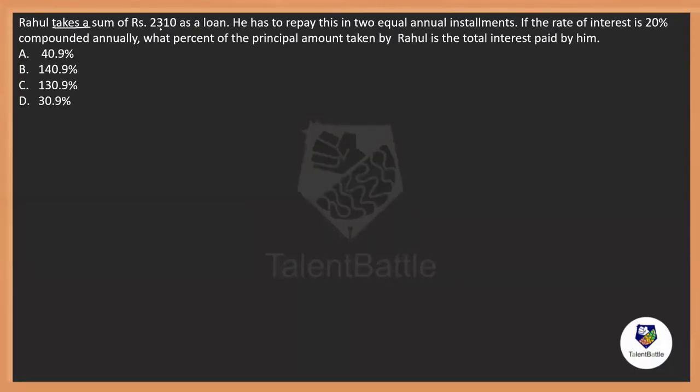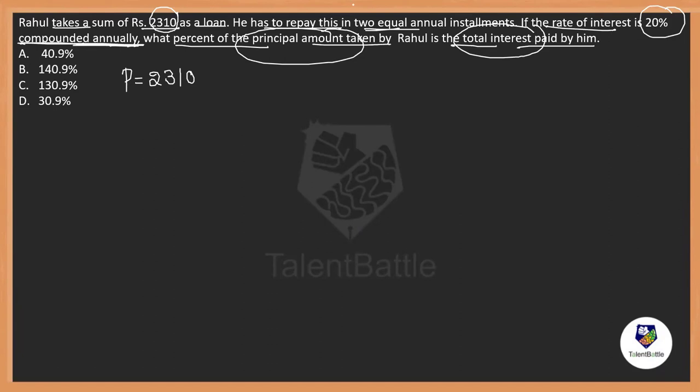Rahul takes a sum of 2,310 as a loan. He has to repay in two equal installments. The rate of interest is 20% compounded annually. What is the percentage of principal amount taken by Rahul is total interest paid by him. So, total interest paid by him is what percentage of the principal amount they are asking.